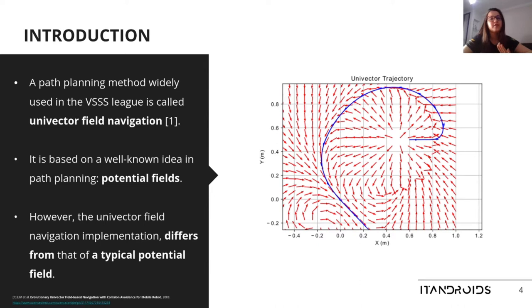However, the univector field navigation implementation differs from that of a typical potential field. We'll discuss the main differences later in this presentation.